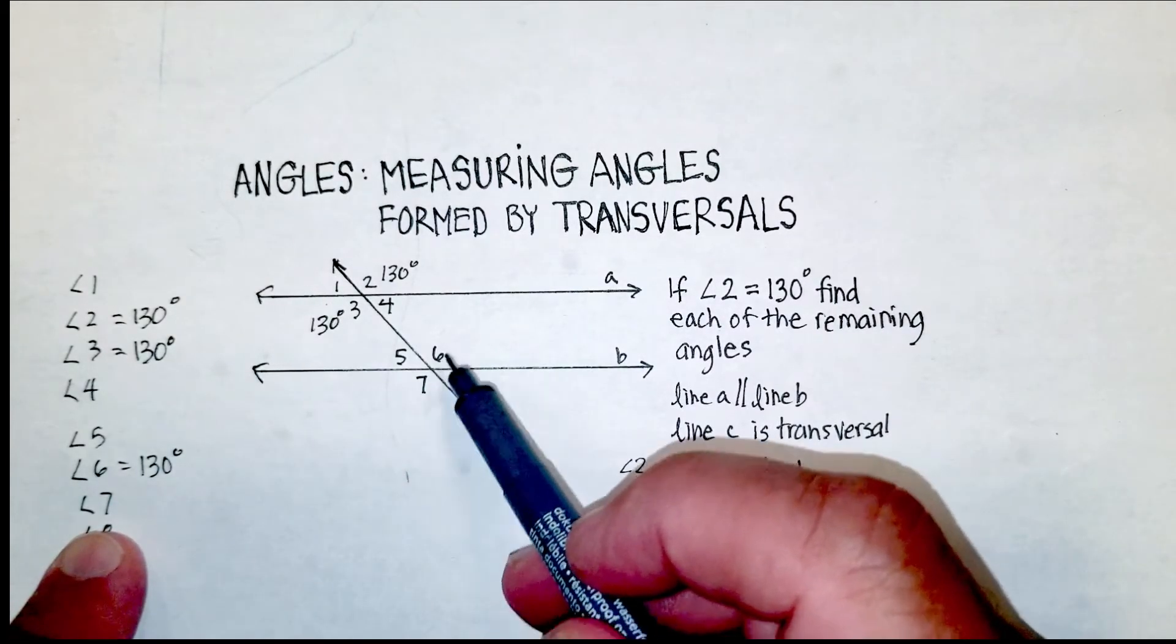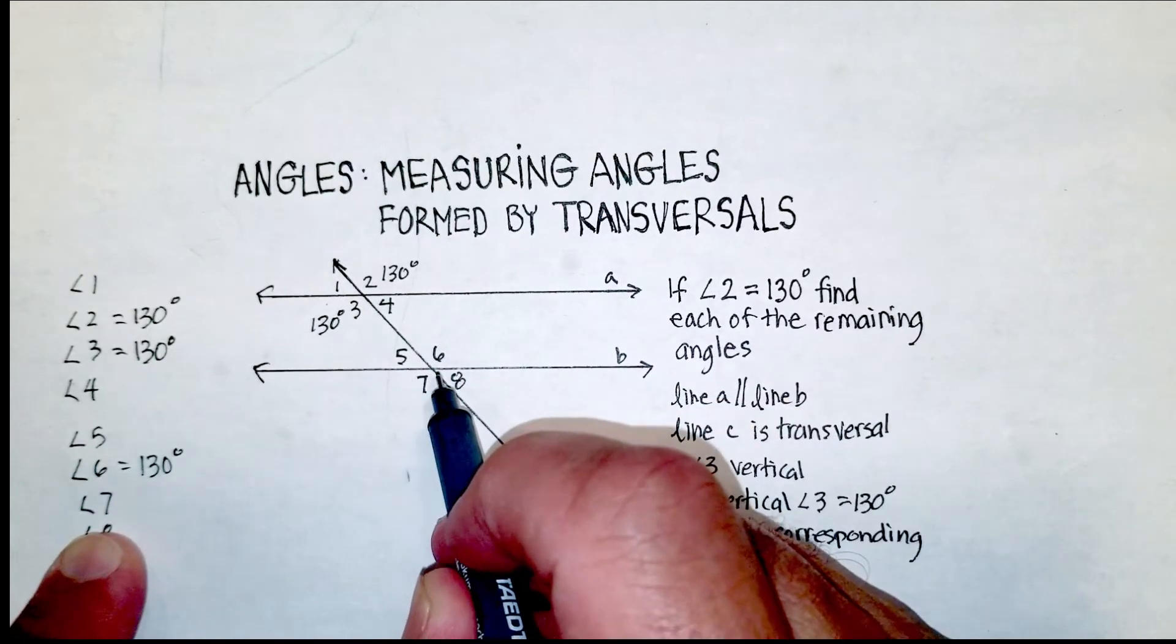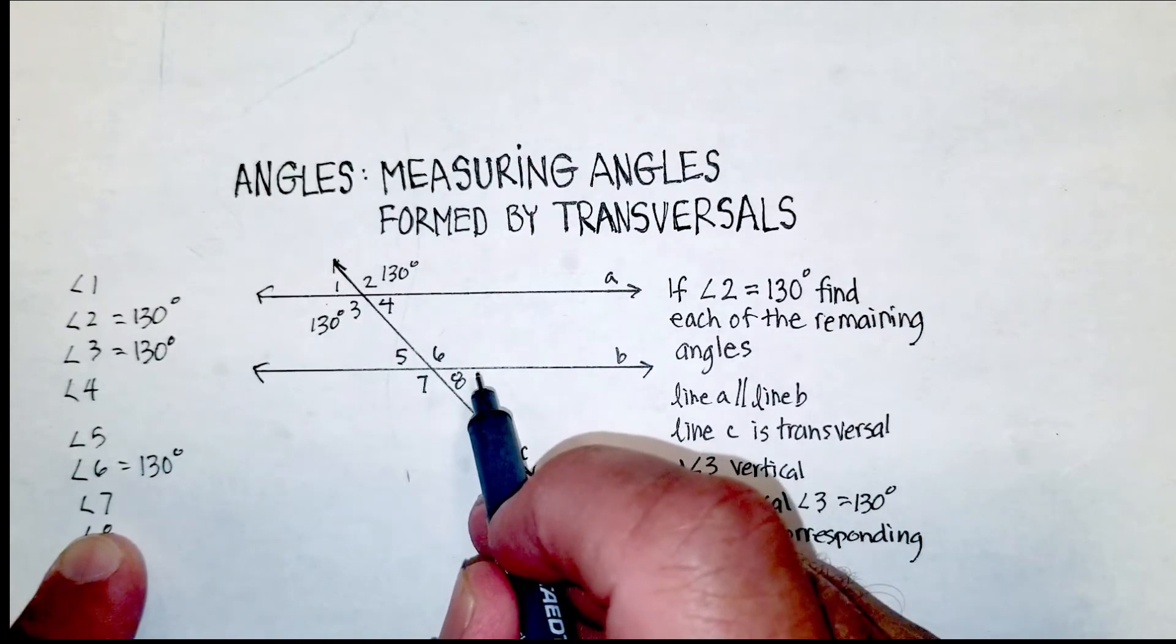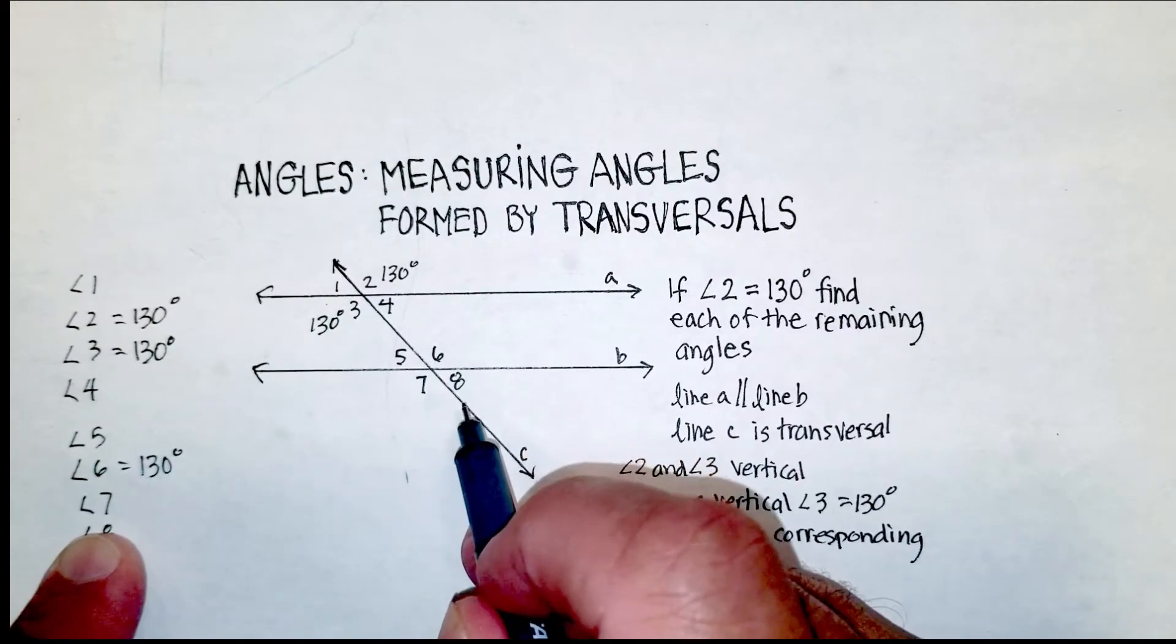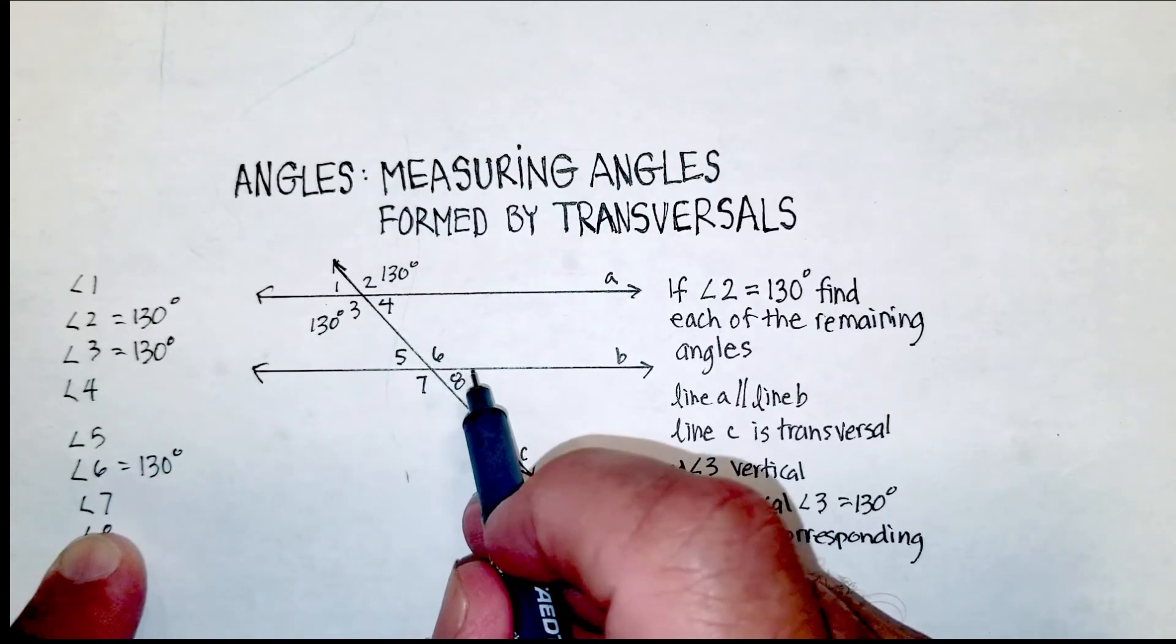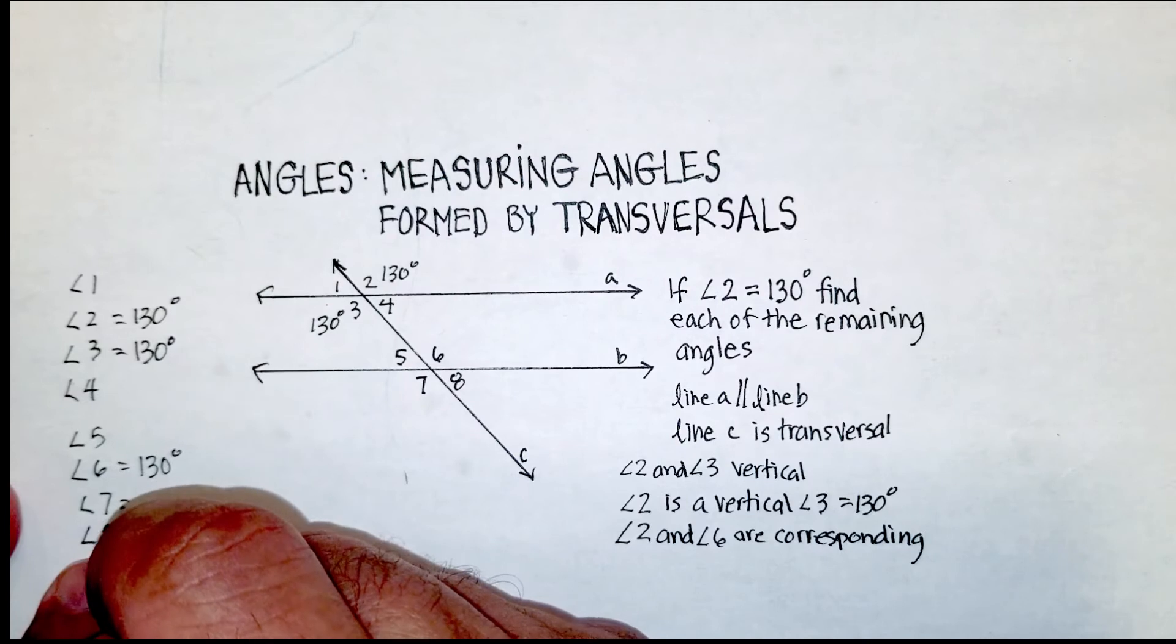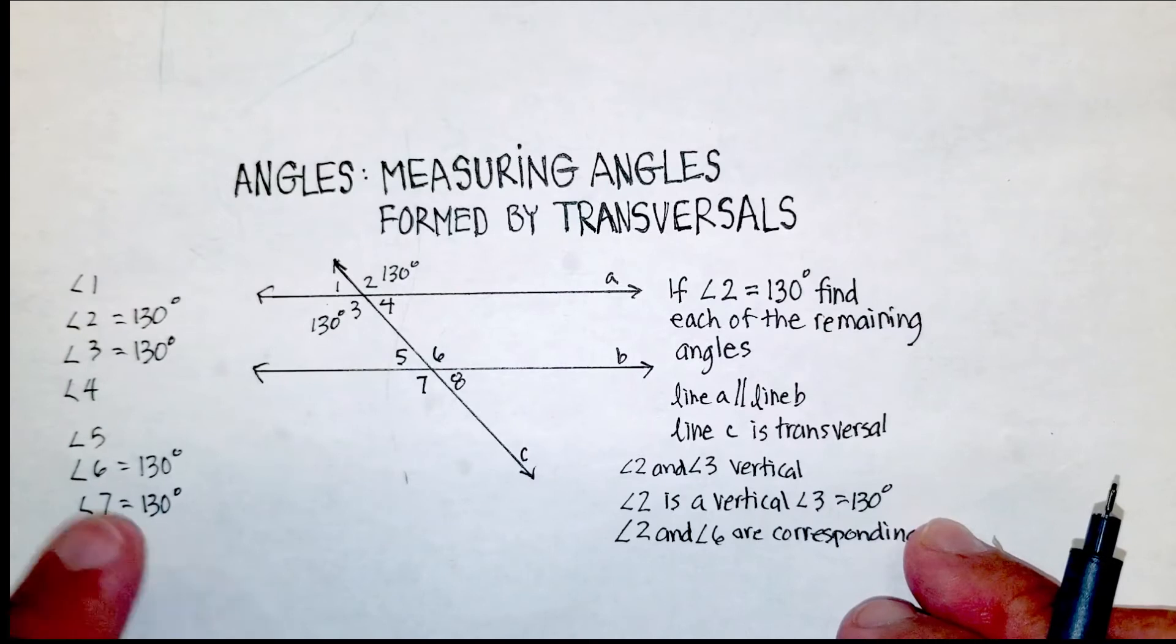We also know that angle six and angle seven are vertical angles. Remember what a vertical angle is. It shares a common vertex and the extension of each of the two sides. So here's a ray on angle six, but it continues down here for angle seven. Here's the vertex, common. Here's the ray for angle six, but here's the extension for angle seven. So six and seven are also congruent, which means they are also 130 degrees.